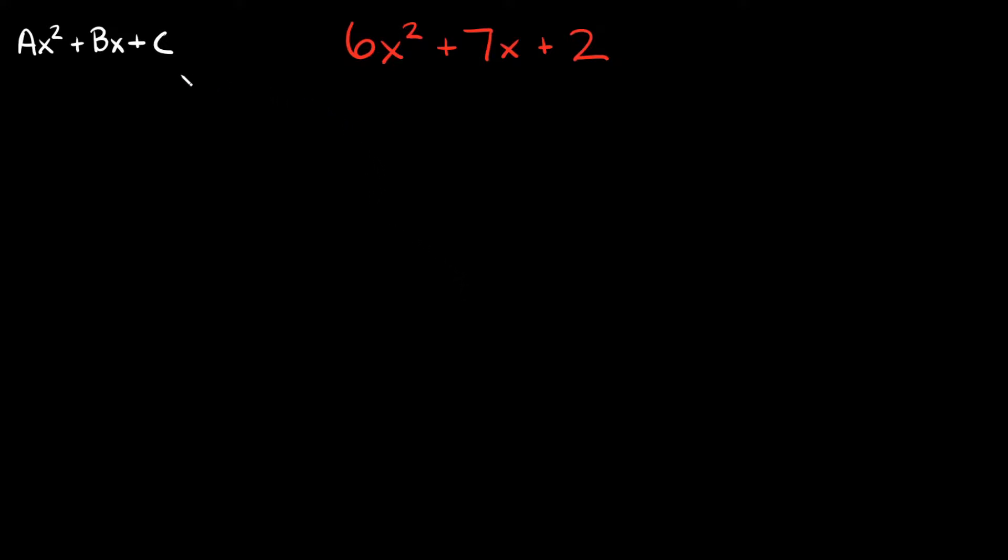This method is called the AC method because if you look at this quadratic equation right here, all you have to do is take your leading coefficient which is represented by this A right here and take whatever number you have at the very end right here and then you just multiply those together.